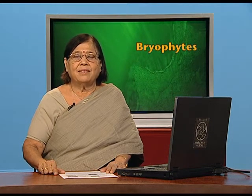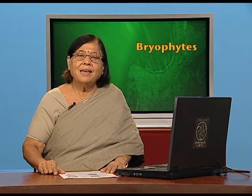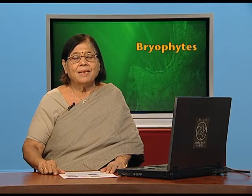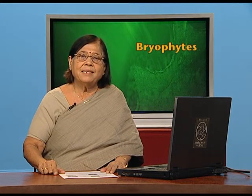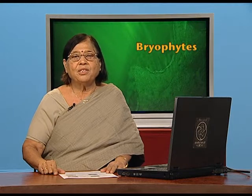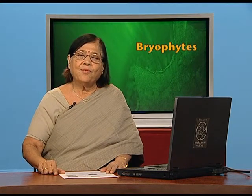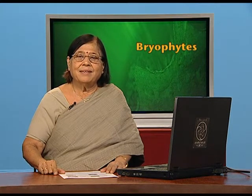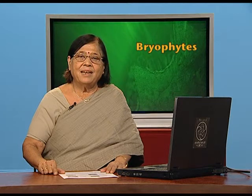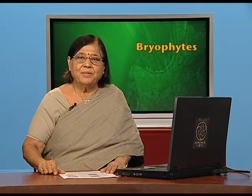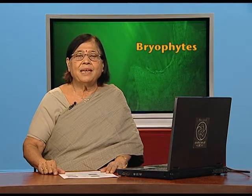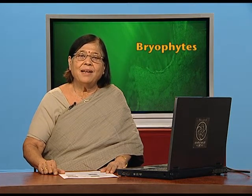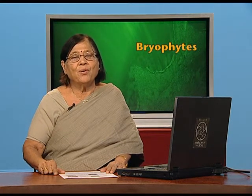Some cells of the sporophyte undergo meiosis and produce haploid cells. These haploid cells grow and produce the gametophyte again. So this is the cycle of bryophytes. The gametophyte is the basic structure which bears reproductive structures — antheridium producing antherozoids and archegonium producing the egg. They fuse and produce a zygote which develops into the sporophyte. The diploid sporophyte undergoes meiosis to produce haploid cells which grow into the gametophyte.